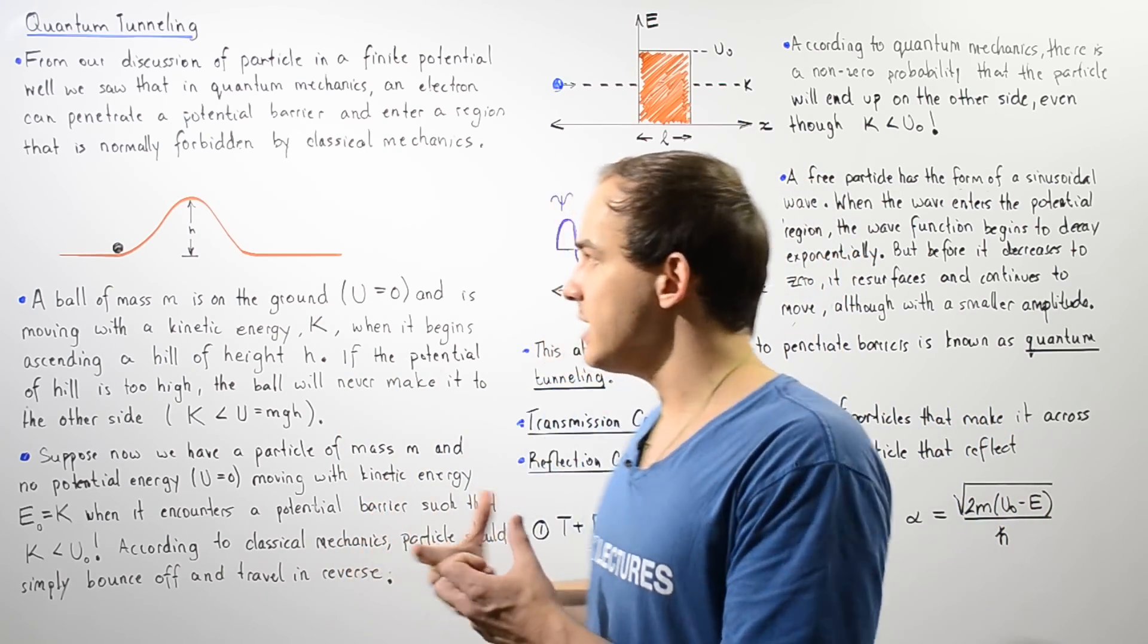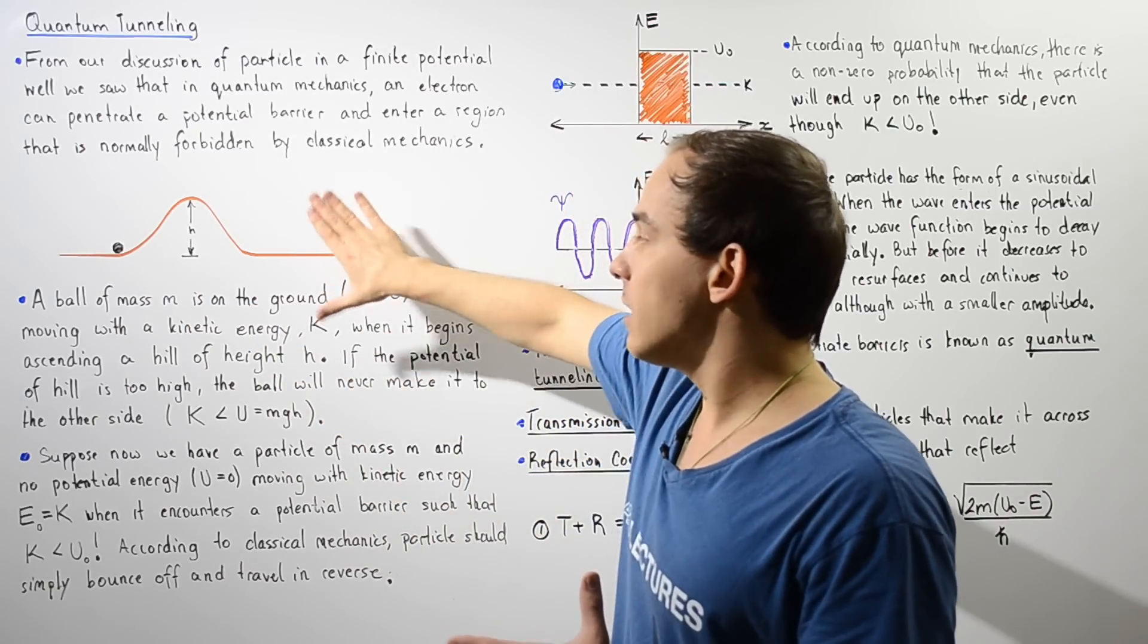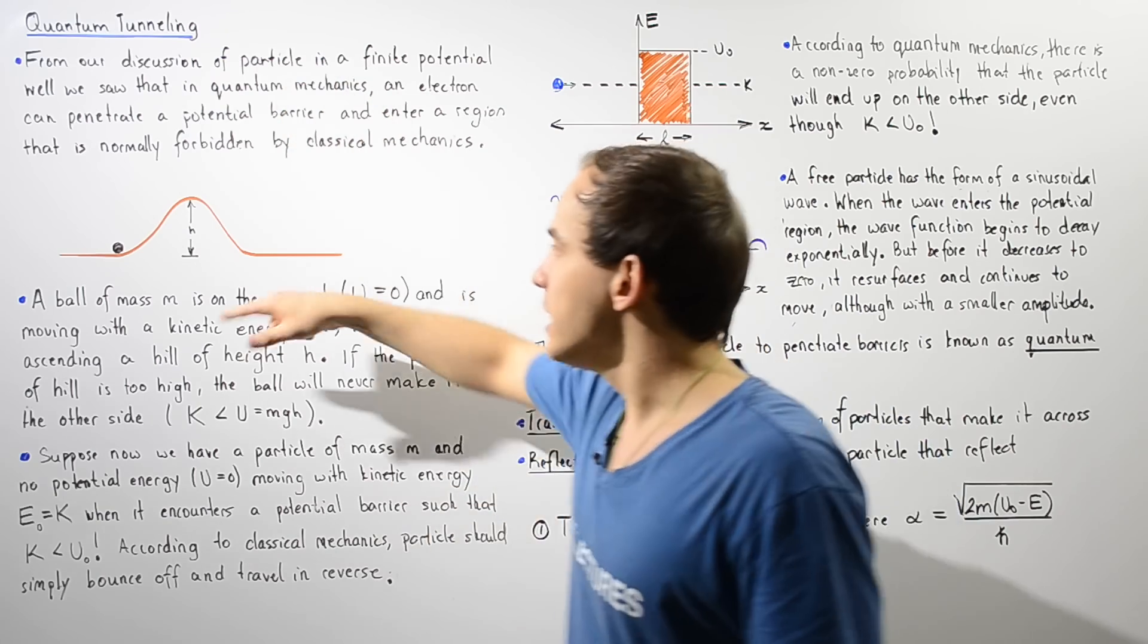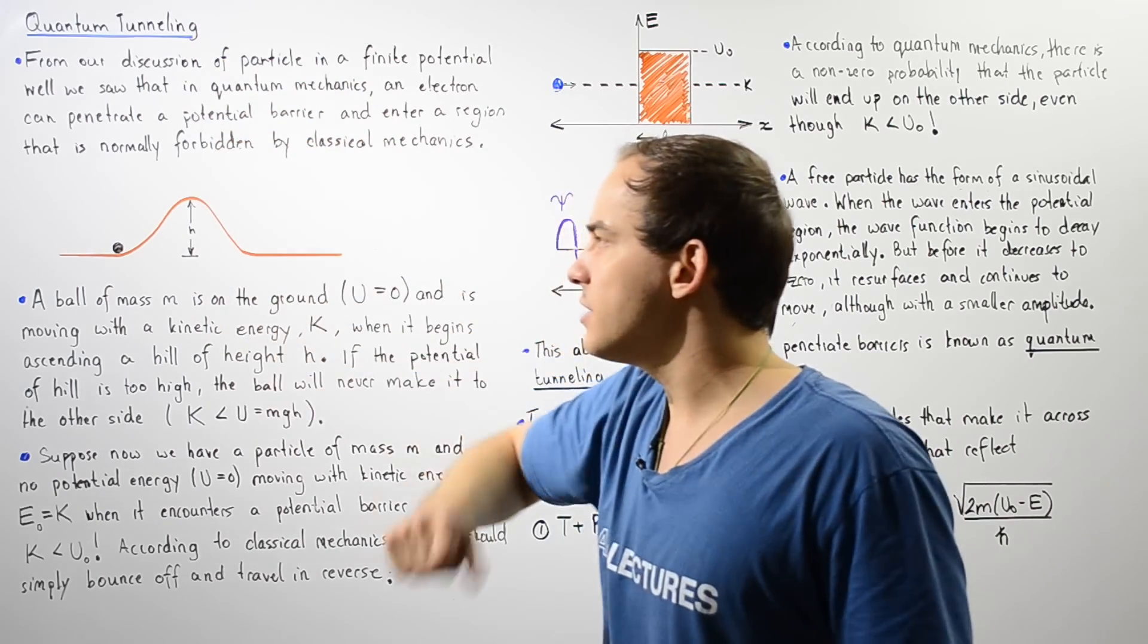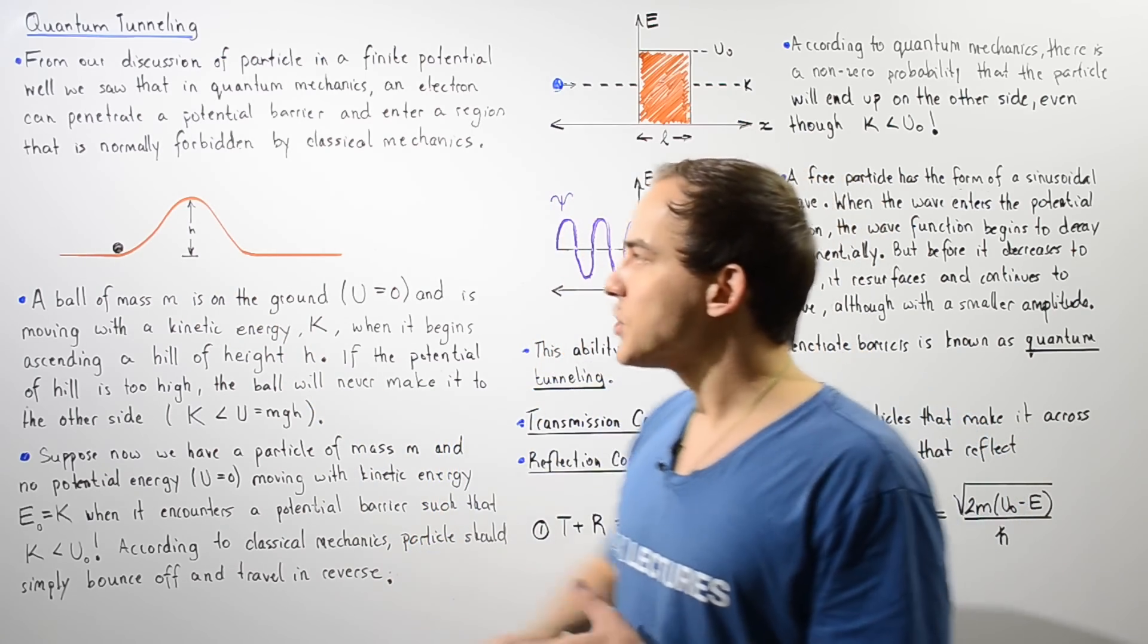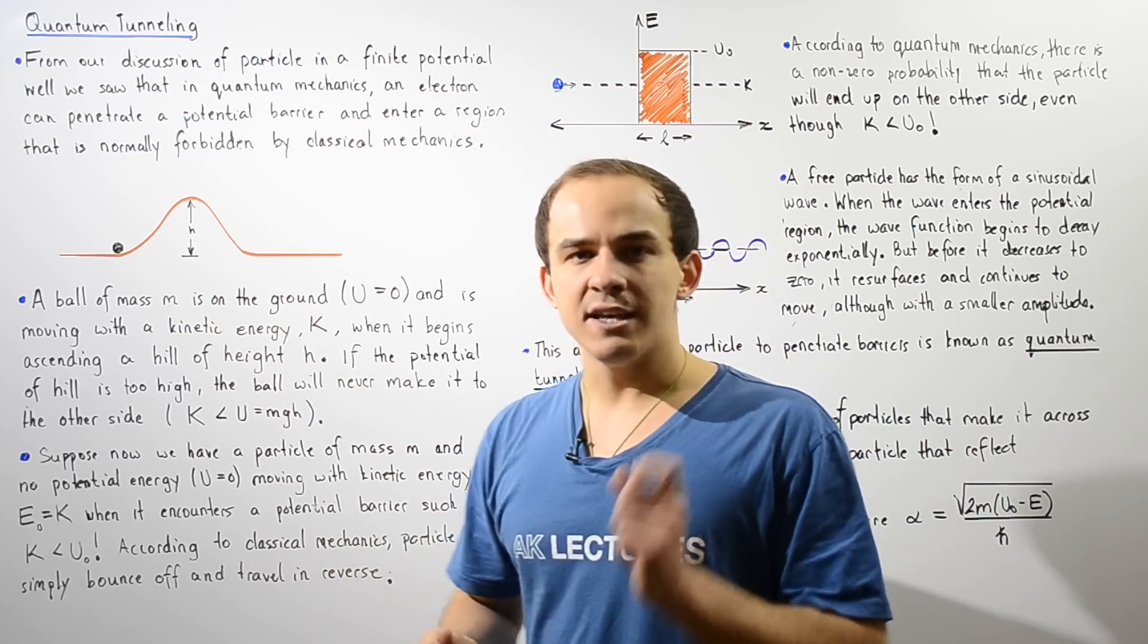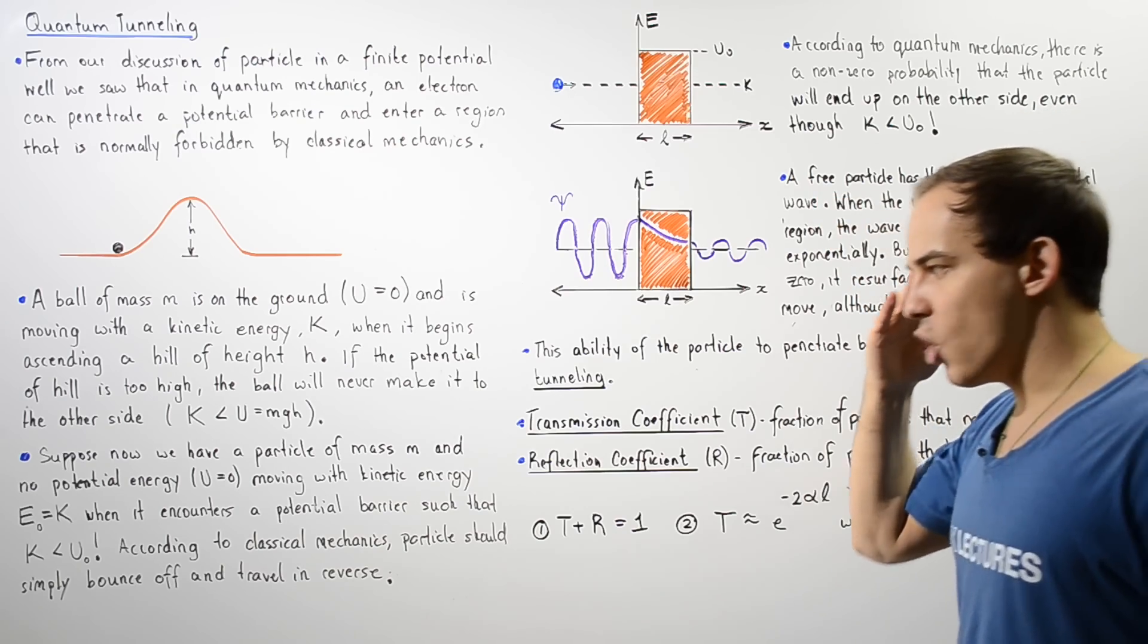So once again, in classical mechanics, we see that there's no way the object will be able to end up on the other side of the hill because the height is simply too great. The gravitational potential energy of the object at the top is greater than the kinetic energy of that object at the bottom of the hill. But in quantum mechanics, even though the kinetic energy is less, the object can still end up at the other side as we'll see in just a moment.